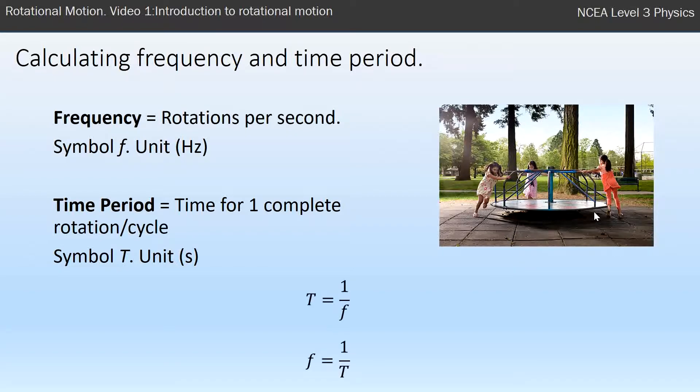And we can calculate between the two. Time period and frequency are related to each other with the following formulas: the time period T equals one over frequency f, and if we rearrange that we get frequency f equals one over time period T.